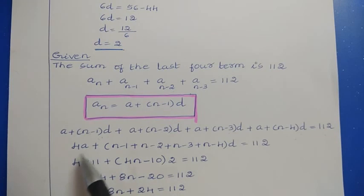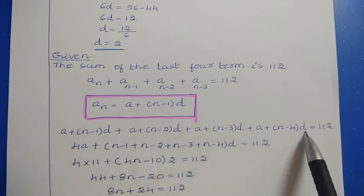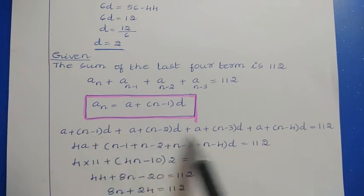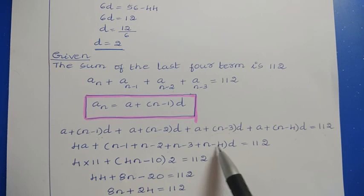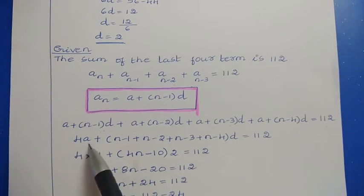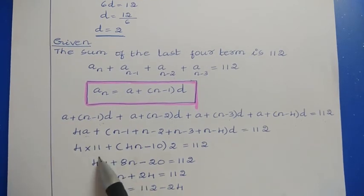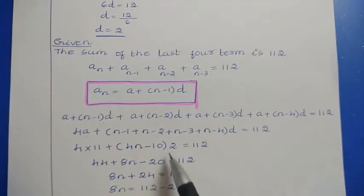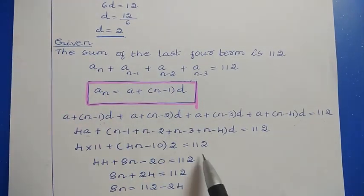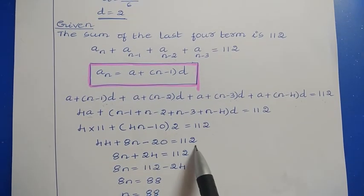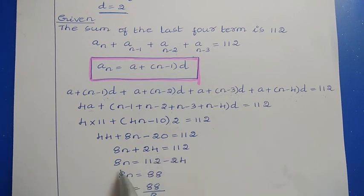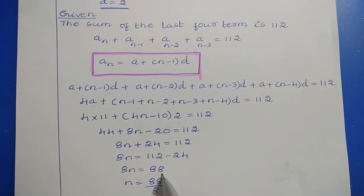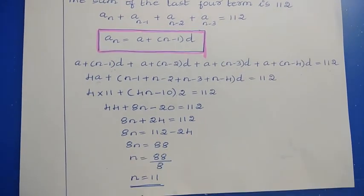Continuing: 8N plus 24 equals 112, so 8N equals 88, giving N equals 11. The number of terms is 11. Thanks for watching.